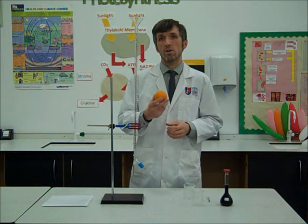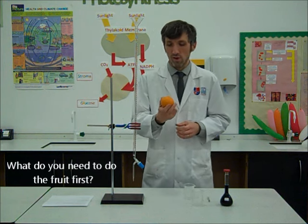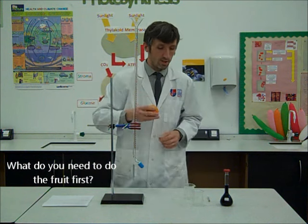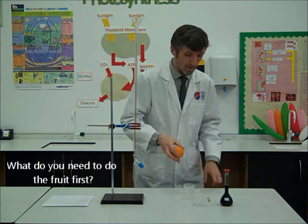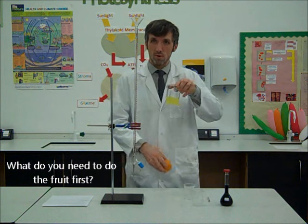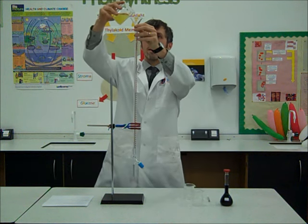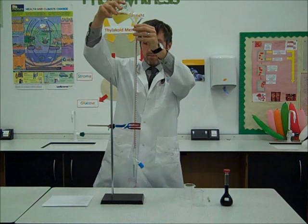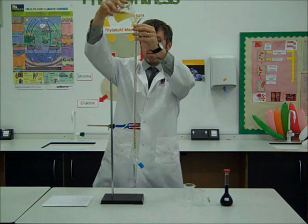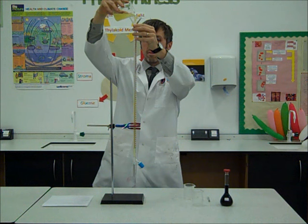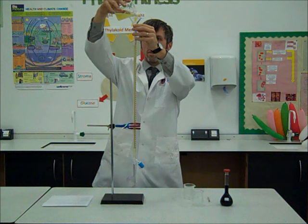To do that, we need to extract the juice of the orange first of all, and then put it into the burette. In Blue Peter fashion, here's one we've done earlier. We're going to put the juice into the burette and fill it right up. Just make sure that the meniscus is on the line.